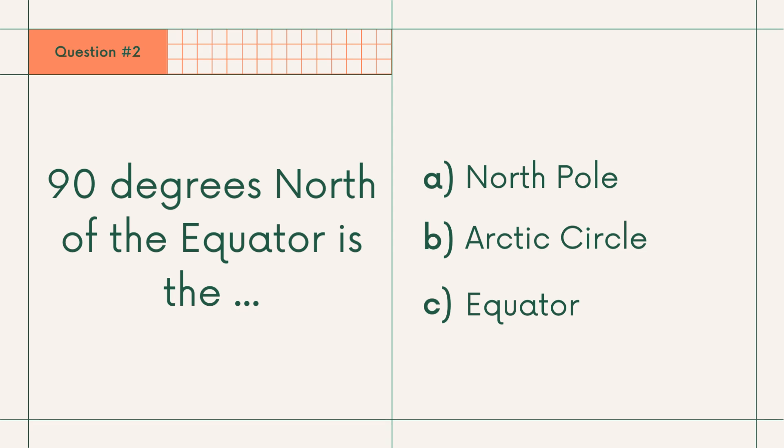Question number 2: 90 degrees north of the equator is the A. North Pole, B. Arctic Circle, or C. Equator. Answer: B. Arctic Circle.